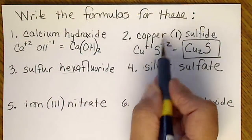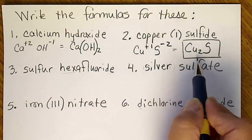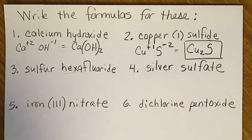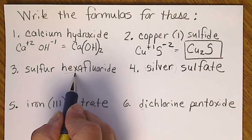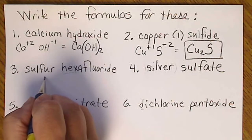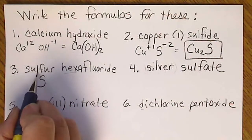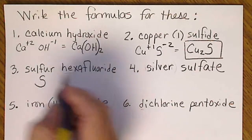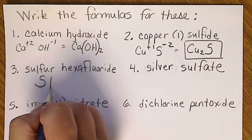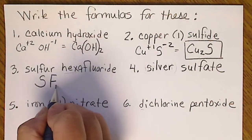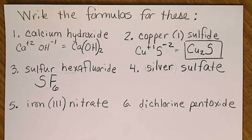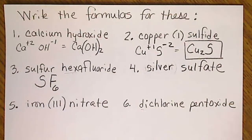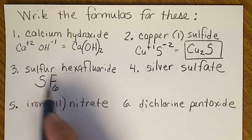Sulfur hexafluoride has a Greek prefix. If there's only one of the first atom, we don't say mono. Sulfur is S, hexa means six, and fluoride is from the fluorine atom, so SF6. This would be a molecule and everything would have eight electrons around it.